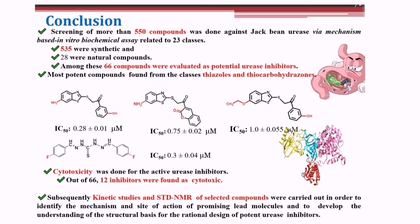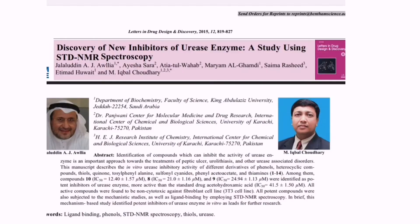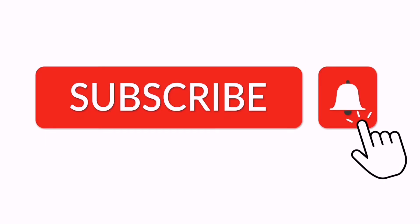In conclusion, we screened 550 compounds for this study, and we have checked cytotoxicity and kinetics studies. This is an international publication for the discovery of new urease inhibitors in order to treat H. pylori infections.